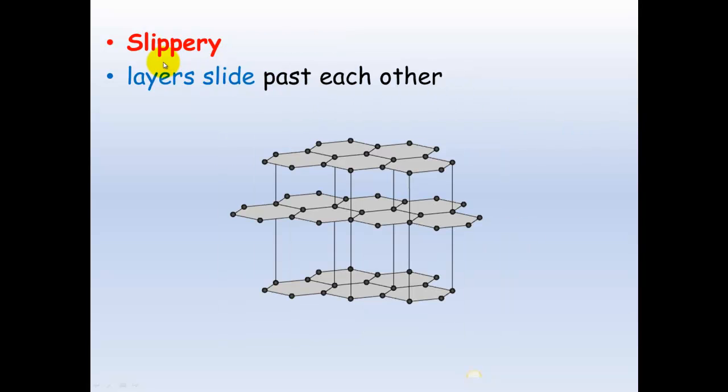Graphite is also slippery, and this is because these layers can slide past one another. Remember, within each of these layers, the carbons are joined to one another with strong covalent bonds. These are very hard to break. However, if a force is applied, these weak dispersion forces holding these layers together will break. And that's what means that these layers can slide past one another.